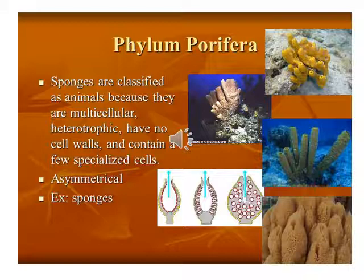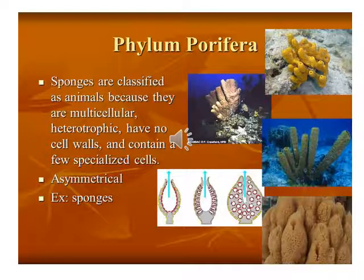Sponges are classified as animals because they are multicellular and heterotrophic, they do not contain a cell wall, and they have a specialized cell called the collar cell. Their body is cylindrical and not exactly symmetrical — they are asymmetrical. Examples include Sycon, Spongia (the bath sponge), and Spongilla.